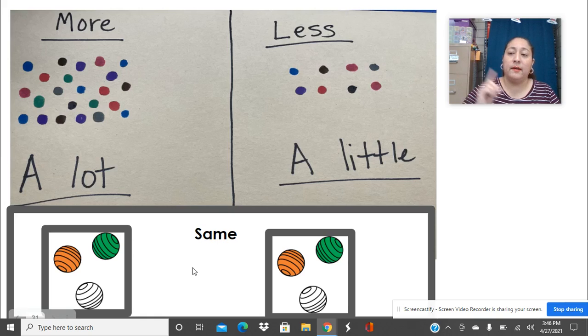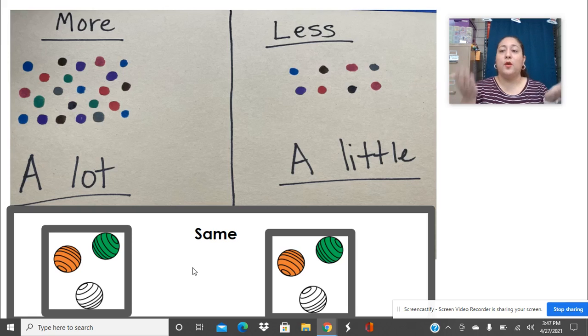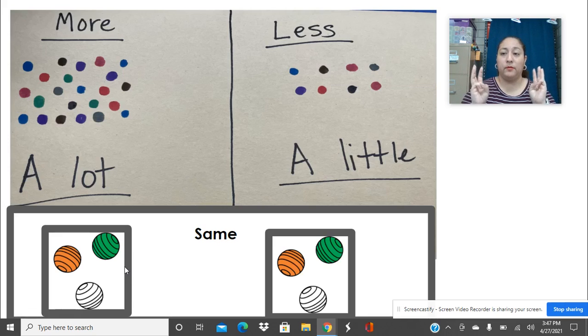And then the other vocabulary word that we're practicing and learning is same. So same is also known as equal. That's when you have two groups with the same amount of things. So here we have three balls in this group and then on this other group we have three balls. So they're the same. Three and three is the same number, right?